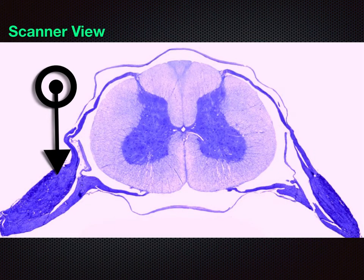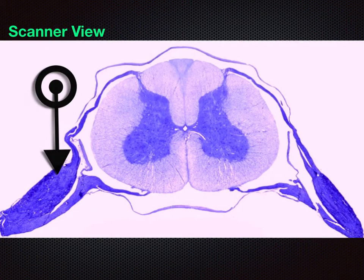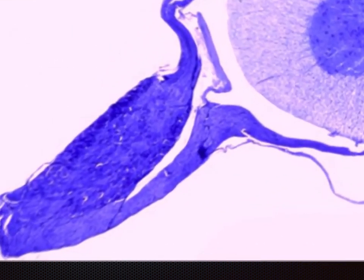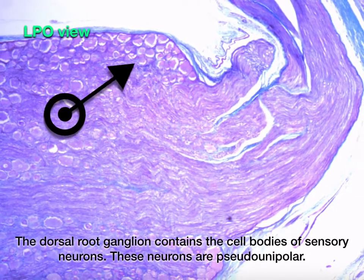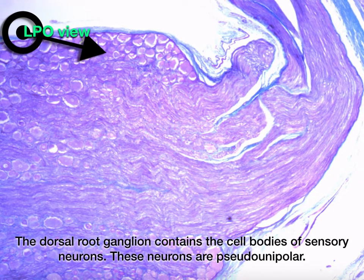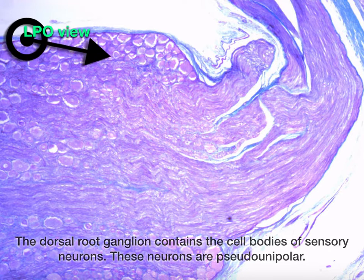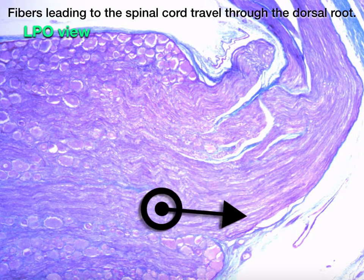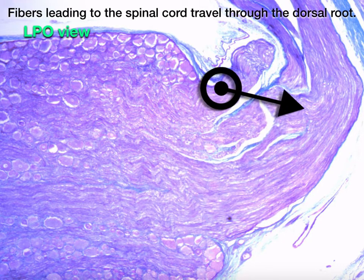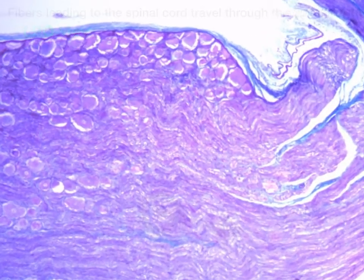The dorsal root ganglion lies beside the spinal cord. It contains the cell bodies of sensory neurons, which are pseudounipolar. Fibers leading to the spinal cord travel through the dorsal root. Let us now view the ganglion cell at HPO.